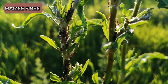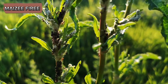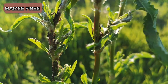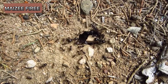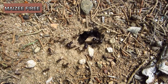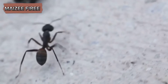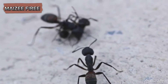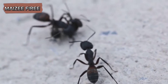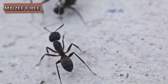Different ant species have evolved various ways of utilizing sound, reflecting the diversity and adaptability of these insects. Some ants often stridulate during predatory activities. The sounds they produce can help in coordinating attacks on prey, ensuring that multiple ants can effectively subdue and transport large or difficult-to-handle prey items.